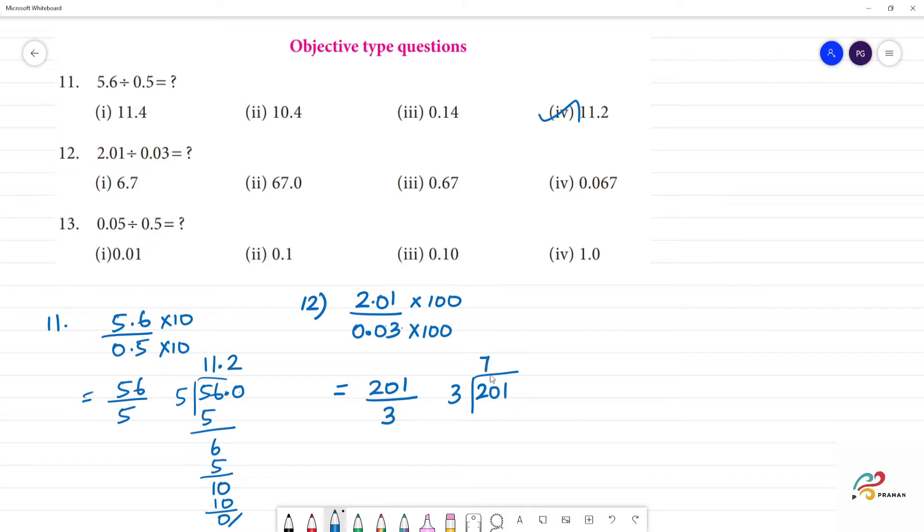3 goes into 20 six times - 3 times 6 is 18. Remainder 20 minus 18 is 2. Next 1, 3 times 7 is 21, remainder 0. What do we call 67? 67 or 67.0. The answer is 67.